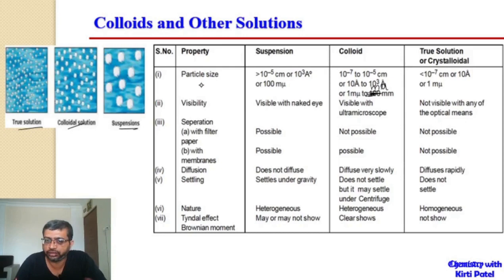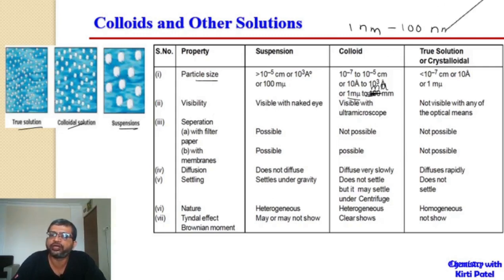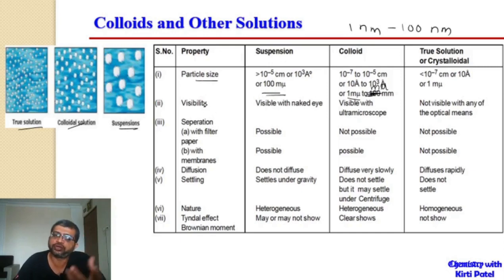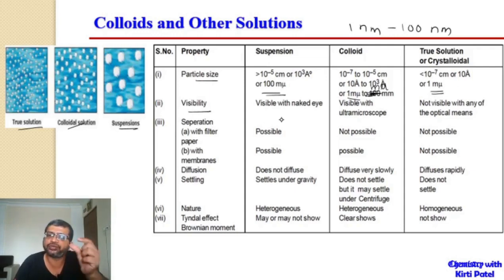According to this, colloidal particle size is between 1 nanometer to 100 nanometers. If the particle size is more than 100 nanometers, it forms a suspended solution which settles down due to its larger size. If the particle size is less than 1 nanometer, it forms a true solution.